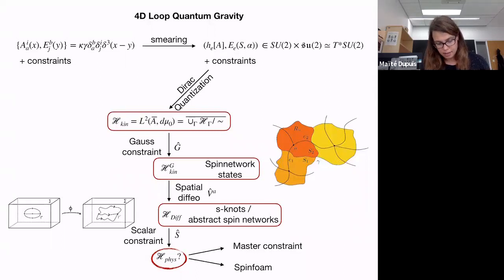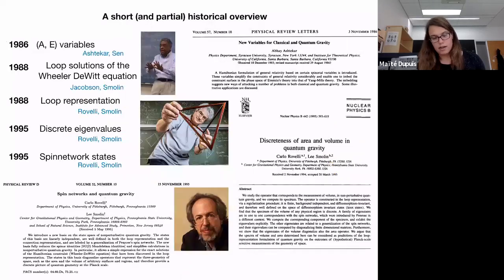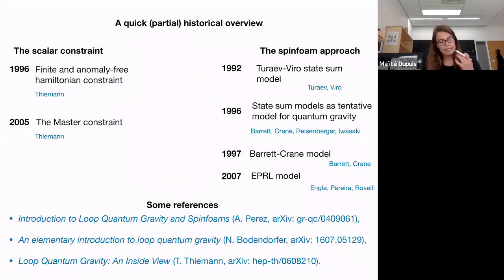The second constraint to impose is the spatial (vector) constraint implementing spatial diffeomorphism invariance. We can impose it similarly by group averaging and obtain the notion of abstract spin networks — the graph is no longer embedded in space, it is space itself. We still have one constraint left: the scalar constraint.